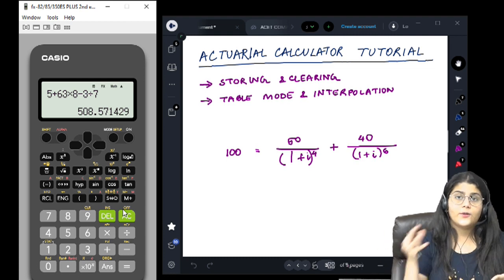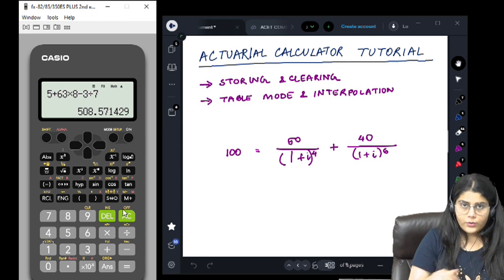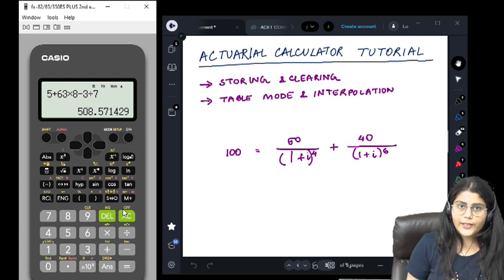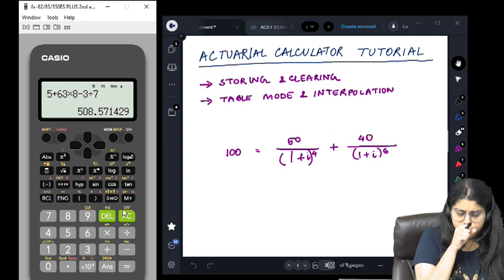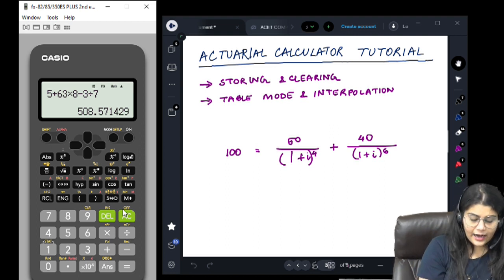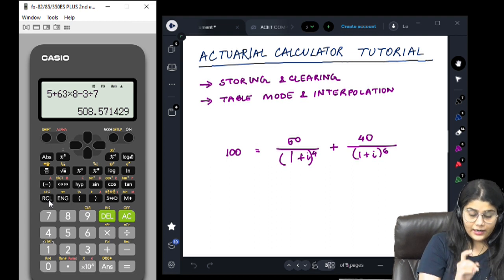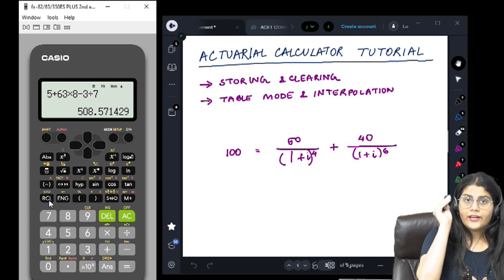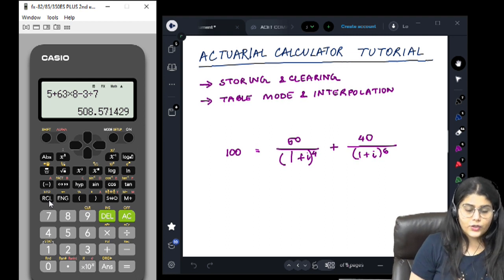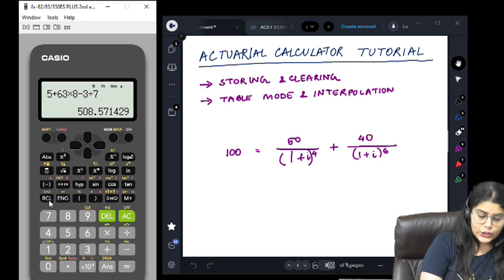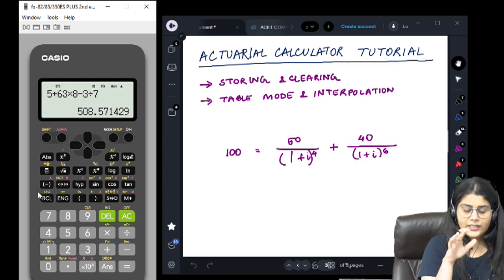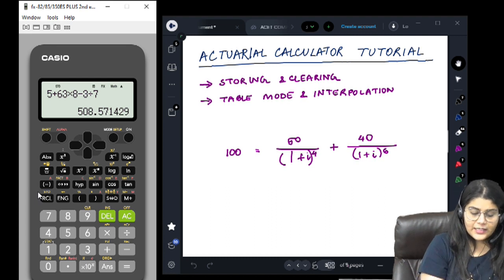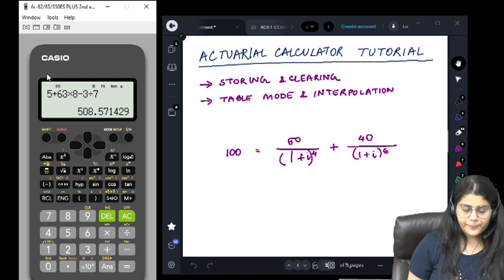I get this value, 508.571429. Now I want to store this value because this exact value I have to use later on. It will be very tedious, very time consuming to enter this entire value. We might have 5, 6 values like this which we will have to remember or note down. Instead, we store this value as a letter or variable.